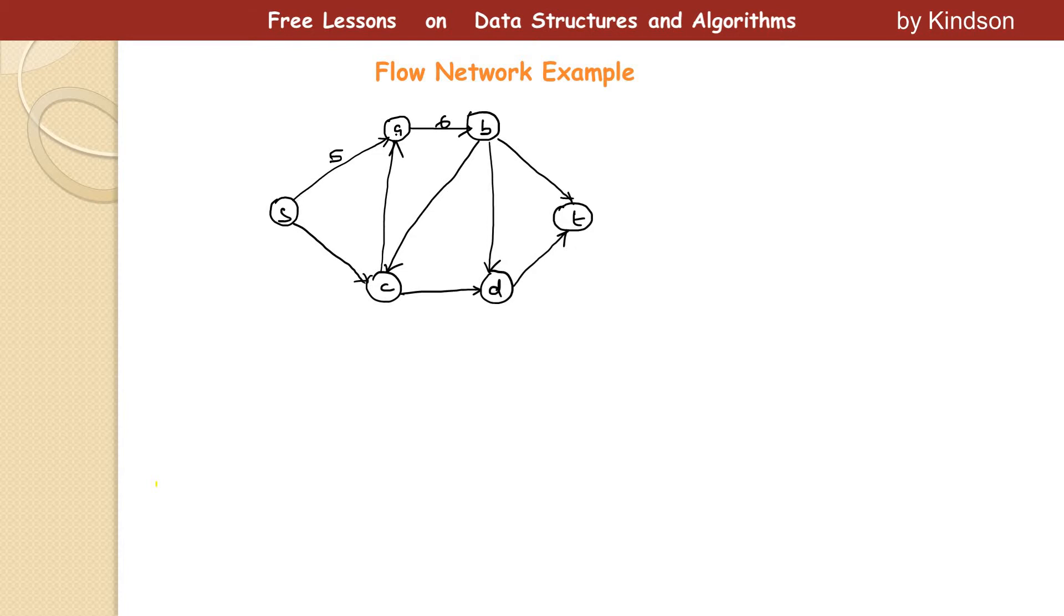So if this is a capacity of this edge S to A, C(S, A) equals five. Right? So we also can have a flow, which will be equal to, let's say, three. The flow is the amount of units of data or whatever that passes through the network. The capacity is the volume that it can carry, it can take, but the flow is the amount it's currently taking. So I'm going to indicate it in the standard way. So normally it's written like three slash five. Sometimes some textbooks may write it in this way, four slash six.